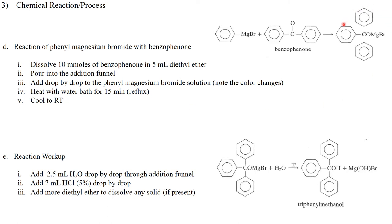At that point we still have this magnesium bromide complex here so we need to work it up. And we typically in chemical reactions have something called a reaction workup. Where in this case we're going to add 2.5 milliliters of water drop by drop into the addition funnel. And then we're going to add 5 milliliters of HCl drop by drop through the addition funnel. And that's to accomplish this last step in the chemical reaction where we remove the magnesium bromide from our molecule and create the alcohol. We might need to add some more diethyl ether to dissolve any solid if present. If not, we're going to move on to the next step.